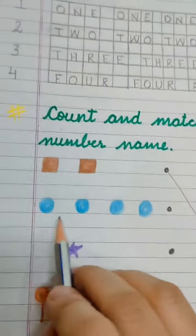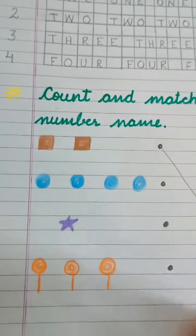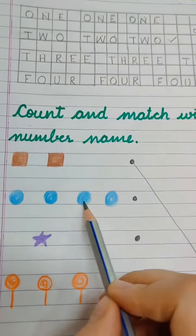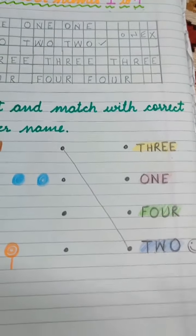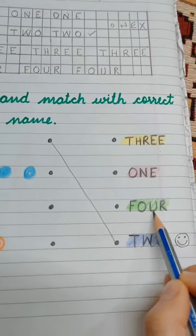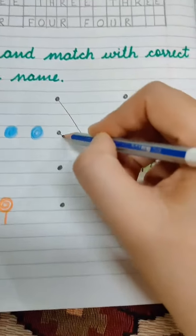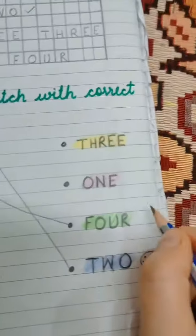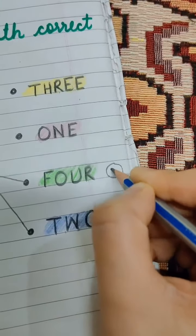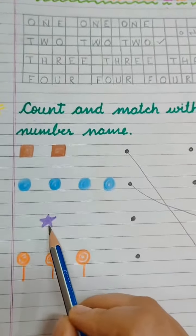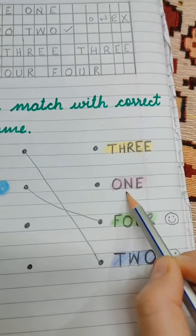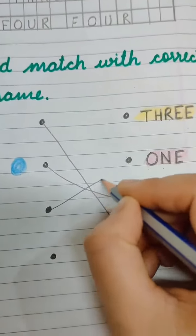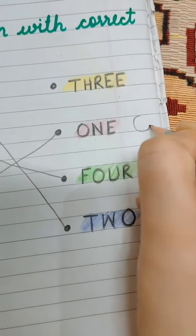Let's count these circles — 1, 2, 3, 4. Where is the name of 4? F-O-U-R. Let's draw the line. 4 is also smiling! How many stars are there? 1. Only 1 star. Where is the spelling of 1? O-N-E. Let's match it with 1. Now 1 also becomes happy!